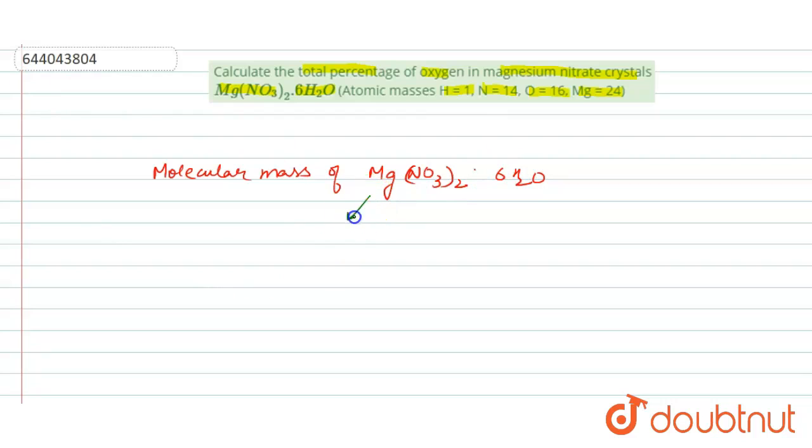The mass of magnesium is 24, that of nitrogen is 14, that of oxygen is 16, that of hydrogen is 1, and that of oxygen is 16.